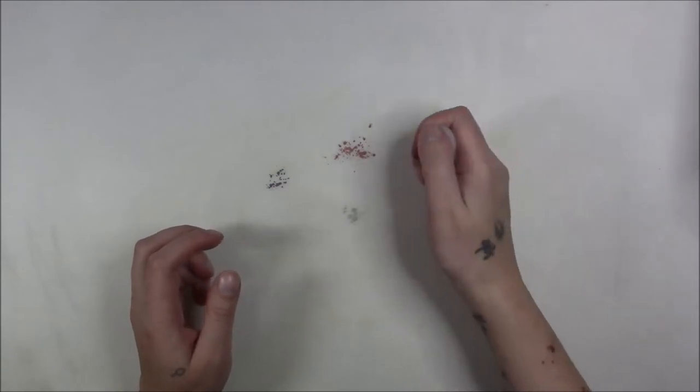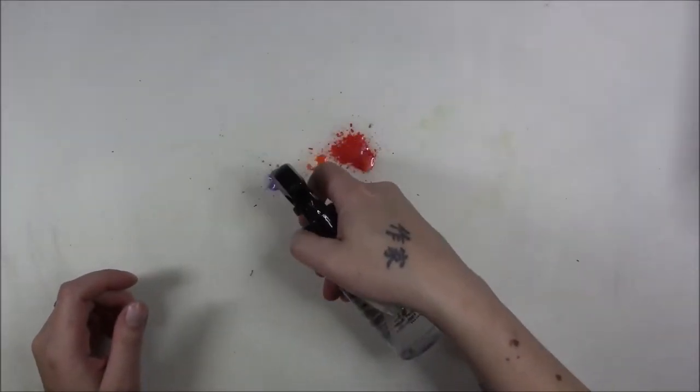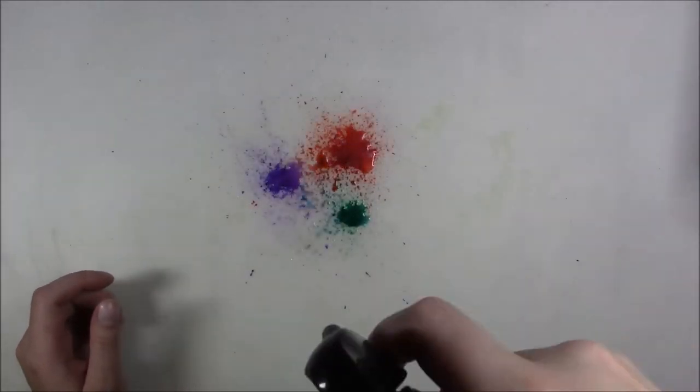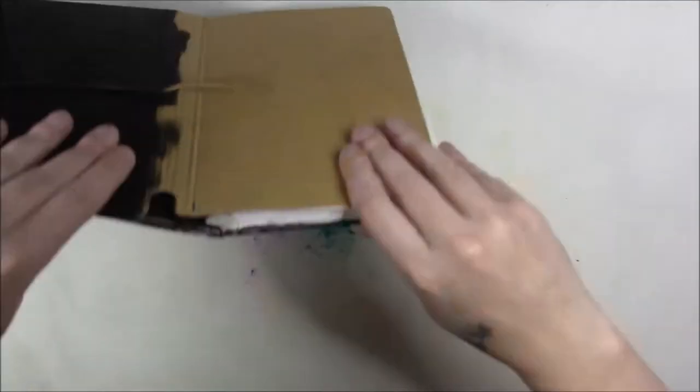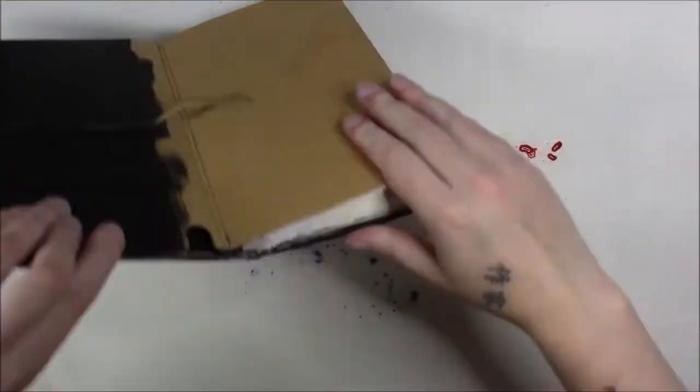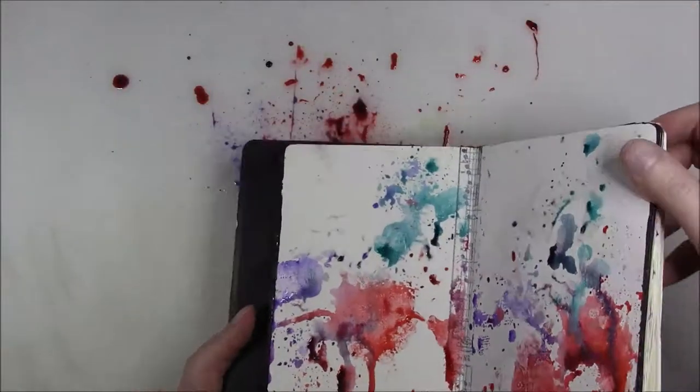What they are is a pigment powder that's basically color in powder form with some gum Arabic and binders. When you sprinkle it and then spray water, you get this wonderful vibrant liquid that, when it's dry, is permanent.